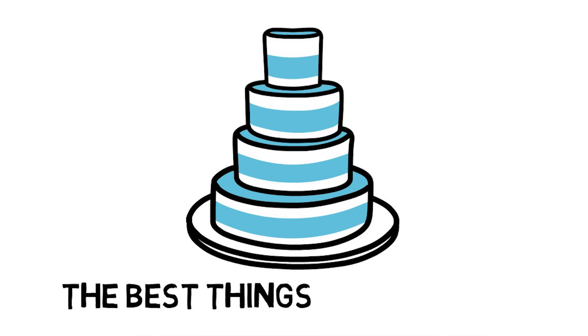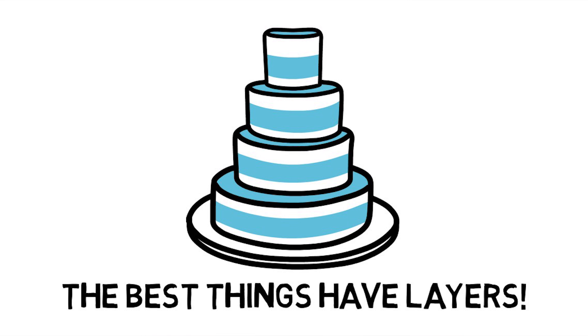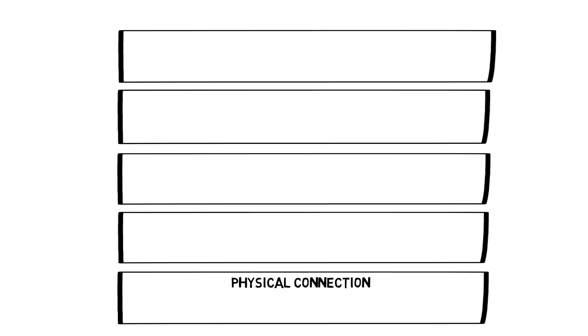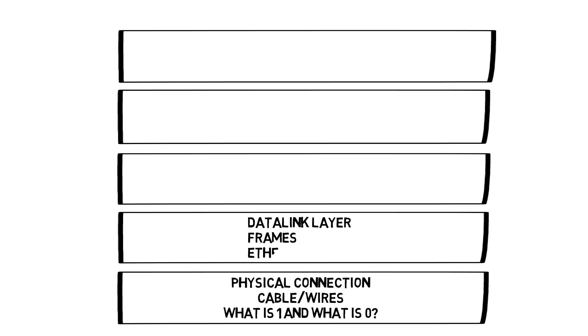Think about a piece of Ethernet cable — there has to be a specification that says this is what a one looks like, this is what a zero looks like. Above that you get what's called the data or link layer, and that talks about the sending of frames. Ethernet can send a frame, which is a certain amount of data, and the link layer understands how to send and receive frames.